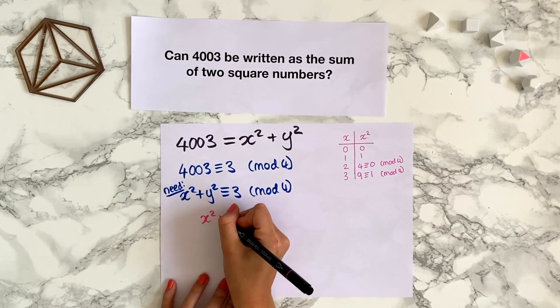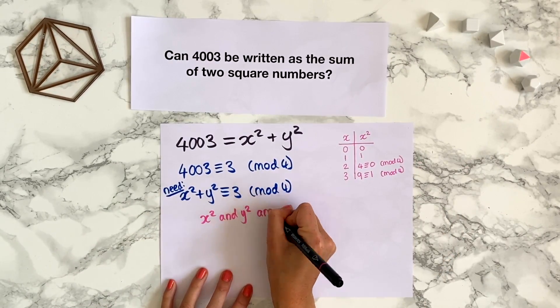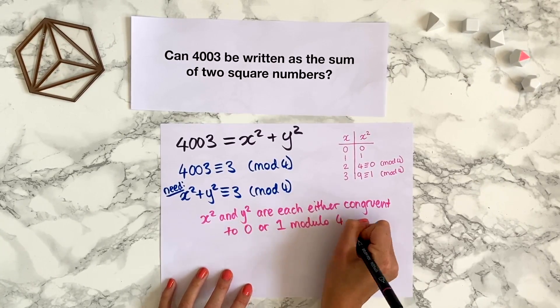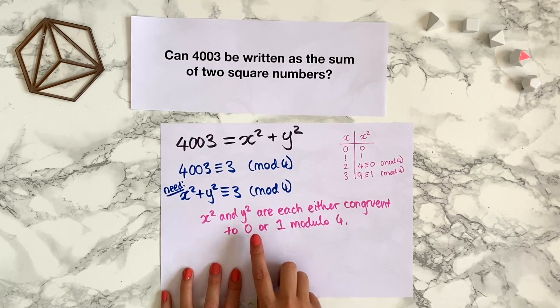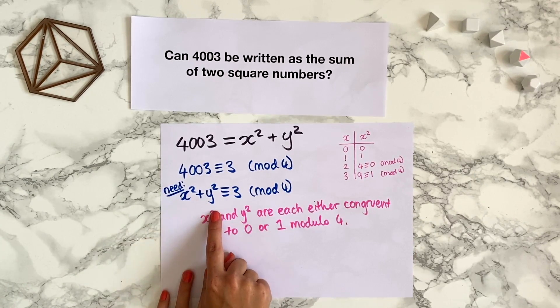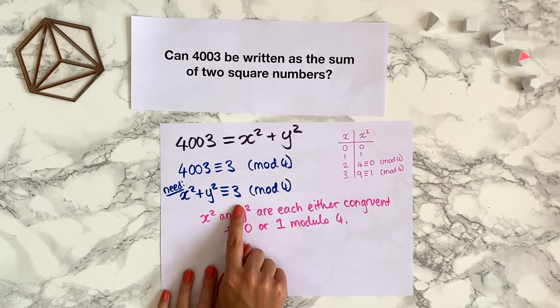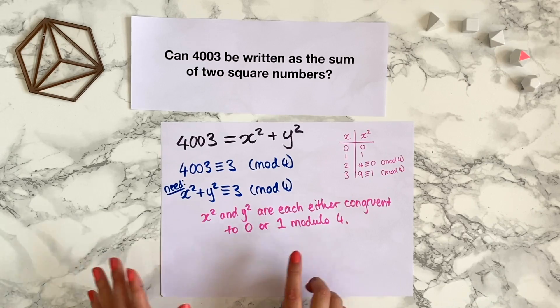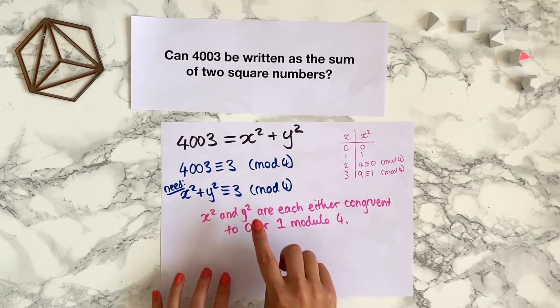So we've shown that x squared and y squared are each either congruent to 0 or 1 modulo 4, regardless of what number they represent. Those are the only possible values for a square number modulo 4. But then x squared plus y squared can't be congruent to 3 modulo 4, because no combination of two of 0 and 1s add to make 3.